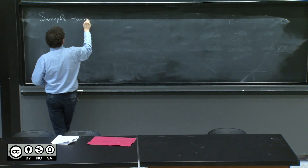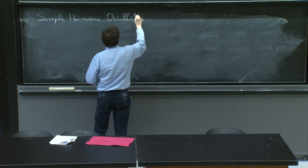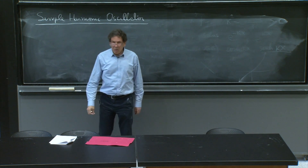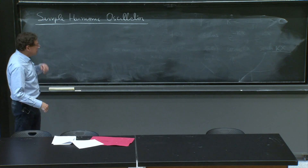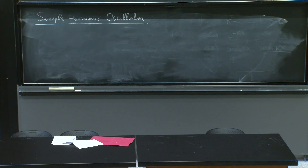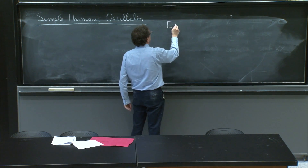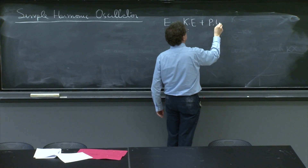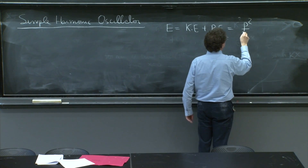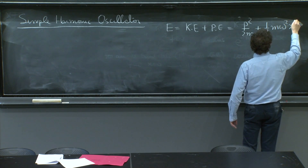Simple harmonic oscillator. So what is there about the simple harmonic oscillator? It's a classical system that you understand perfectly well. An oscillator — a spring with a mass — oscillates and has an energy which is the kinetic energy plus the potential energy. That's p squared over 2m plus one-half m omega squared x squared.